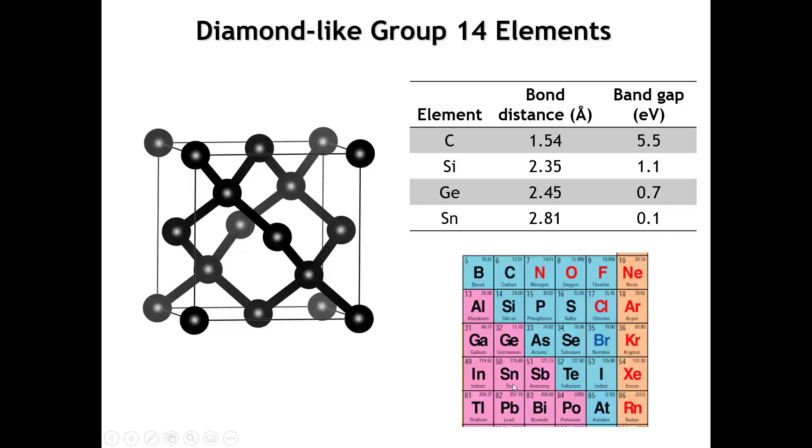Of course, if we were to keep going to lead, well, as you all know, lead is not a semiconductor. Lead is a metal. It has a close-pack structure. So what's responsible for this transformation from insulator at the top of group 14 to semiconductors for silicon, germanium, and to some extent tin, and then finally metallic behavior as we get to the bottom of group 14? And in fact, this behavior is not unique to group 14. We see this transformation from insulating to semiconducting to metallic across much of the P block of the periodic table. So how can we understand this from a bonding point of view?